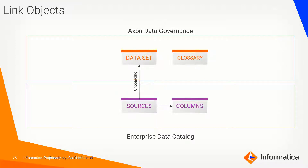What I am now going to do is run something called an onboarding job. This onboarding job is a script that gets automated — it runs every night by the Axon server, assuming that it is integrated with your data catalog. It will bring all the information from your data catalog into the Axon side where the glossary is my point of contact.